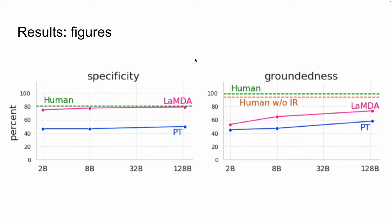Other figures about specificity show the LaMDA model was better than the pre-trained model and actually close to what humans could do, which matches the paper's claims. For groundedness, having an external source check similarly makes sense and the figures reflect that.